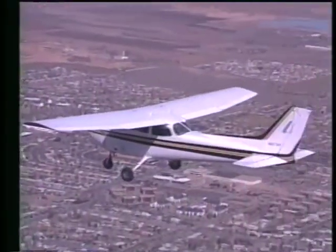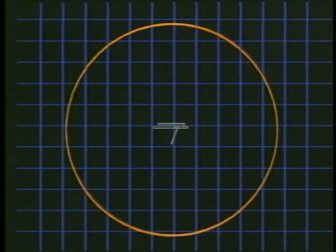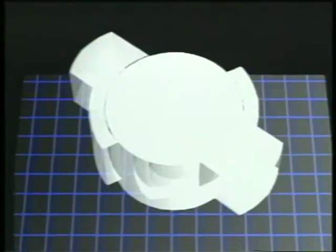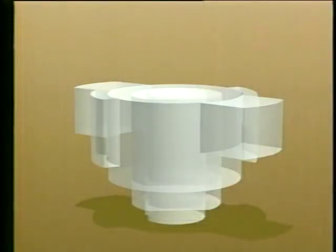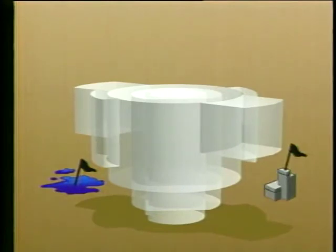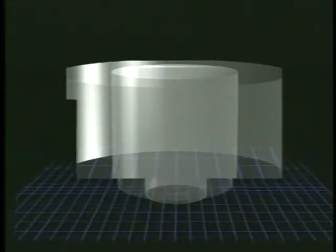Now let's turn our attention to some of the procedures and communications for an arrival at a controlled airport. If you are arriving at an airport with an operating control tower, it is a good practice to make your initial call-up approximately 15 miles from the airport. Before you enter Class D airspace, you must establish and maintain radio communications with the tower. A clearance from ATC is required before you enter Class B airspace. Your initial call-up should be outside of the Class B boundary and over a designated visual checkpoint. If you are approaching an airport in Class C airspace, you must establish two-way radio communications with ATC before entering the outer circle. You are strongly encouraged to make the initial call within the outer area.